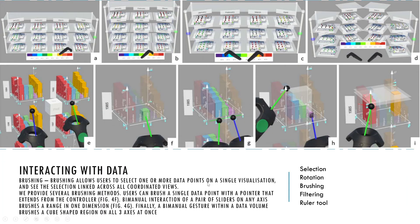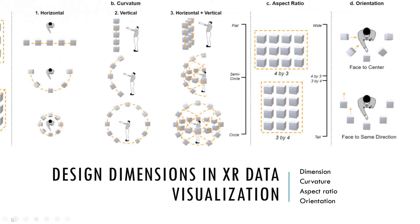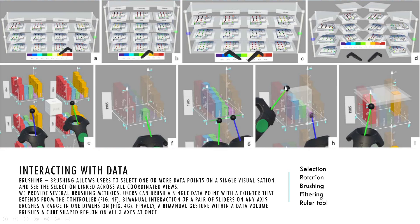The researchers first identified five factors they needed to design their layout. They then created an interaction system that includes selection, rotation, brushing, filtering, and a ruler tool, allowing the user to manipulate data in real time in a VR environment. Brushing allows users to select one or more data points on a visualization and see the selection linked across all coordinated views. Several brushing methods are provided: a user can brush a data point with a pointer extending from the controller, or via bi-manual interaction with sliders on any axis. Brushes range in one dimension, and a bi-manual gesture with a data volume brushes a cube-shaped region on all three axes at once.